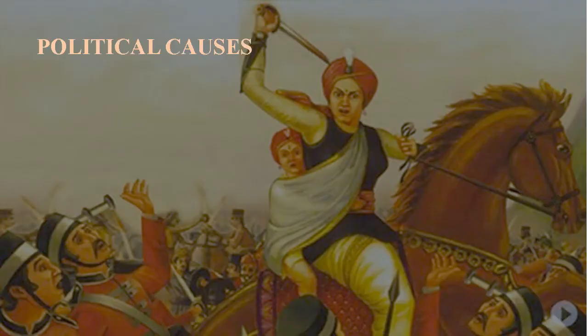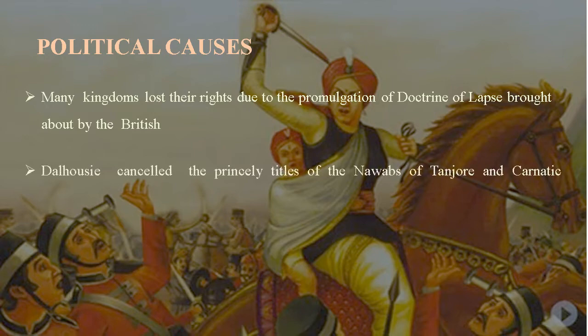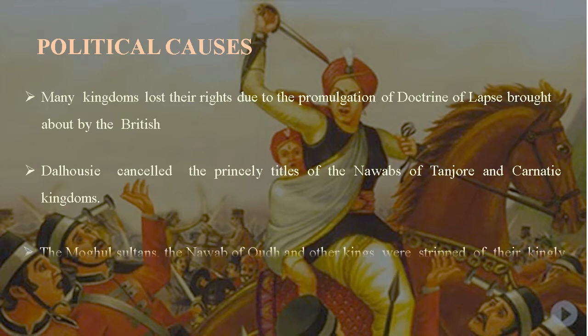Political Causes. Many kingdoms lost their rights due to the promulgation of the Doctrine of Lapse brought about by the British. Dalhousie cancelled the princely titles of the Nawabs of Tanjore and Carnatic Kingdoms. The Mughal Sultans, the Nawab of Awadh, and other kings were stripped of their kingly status.